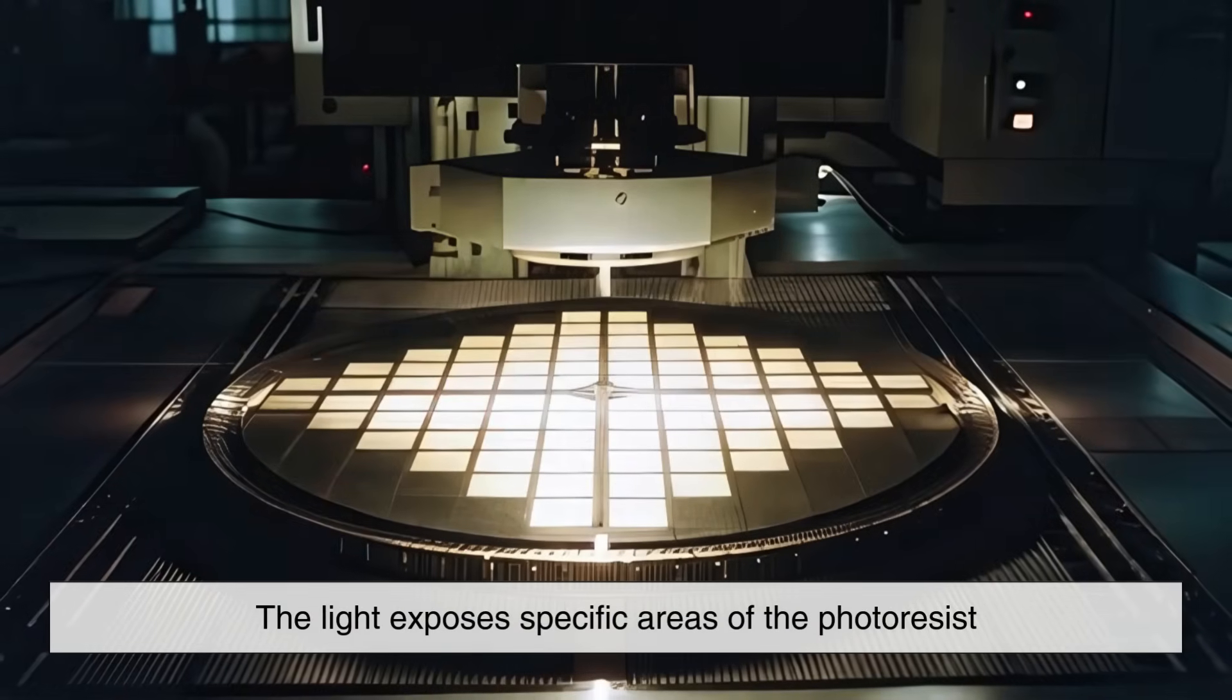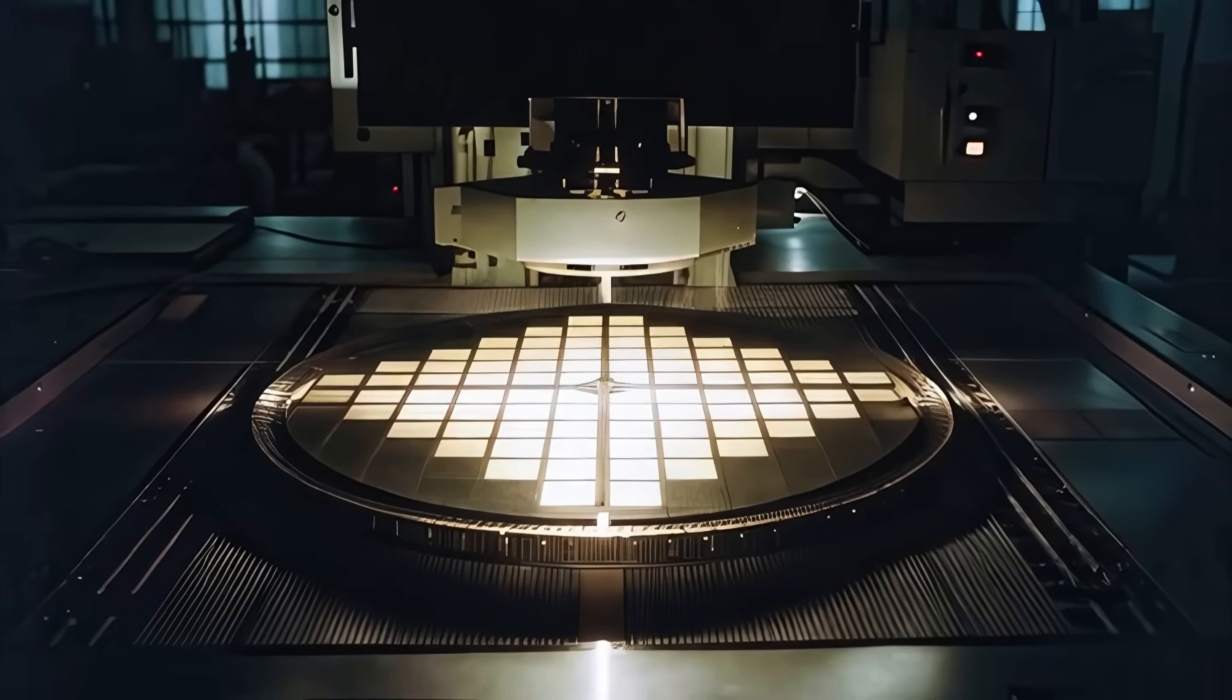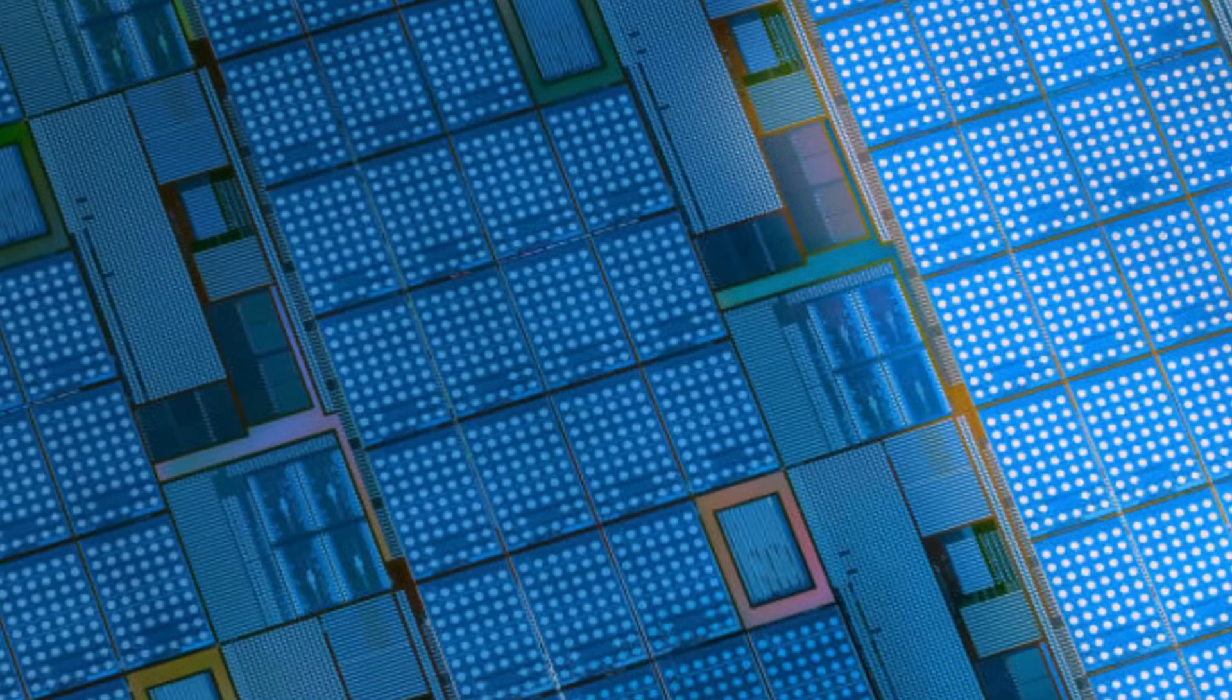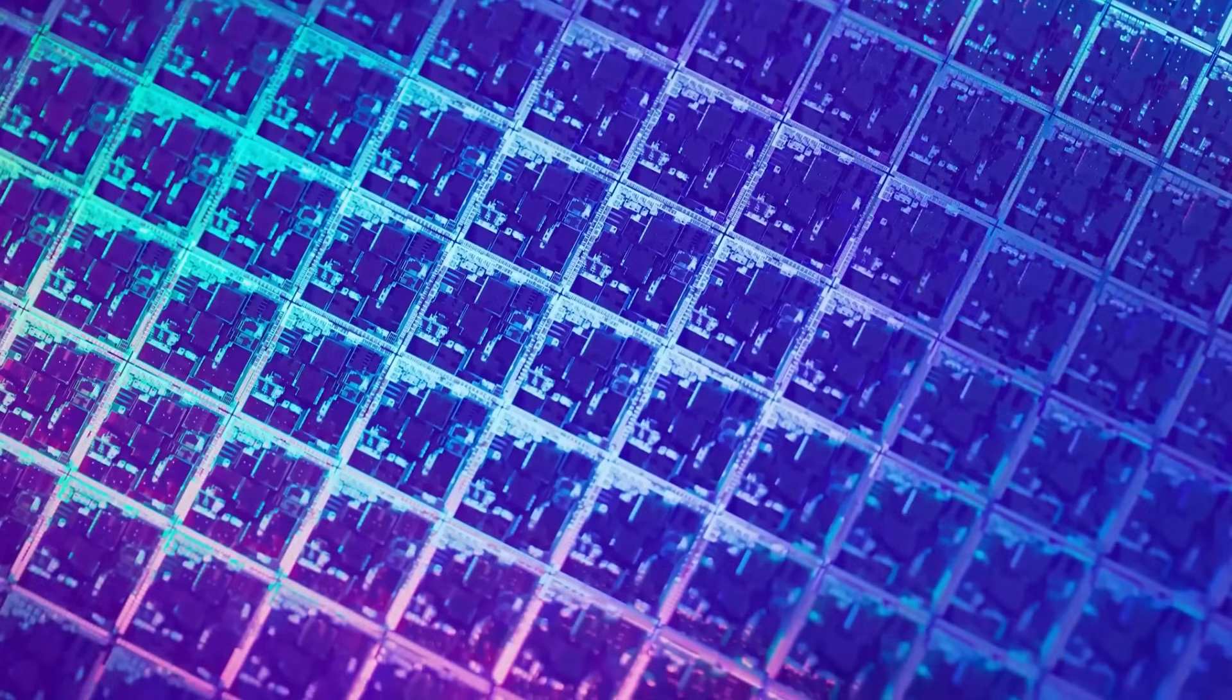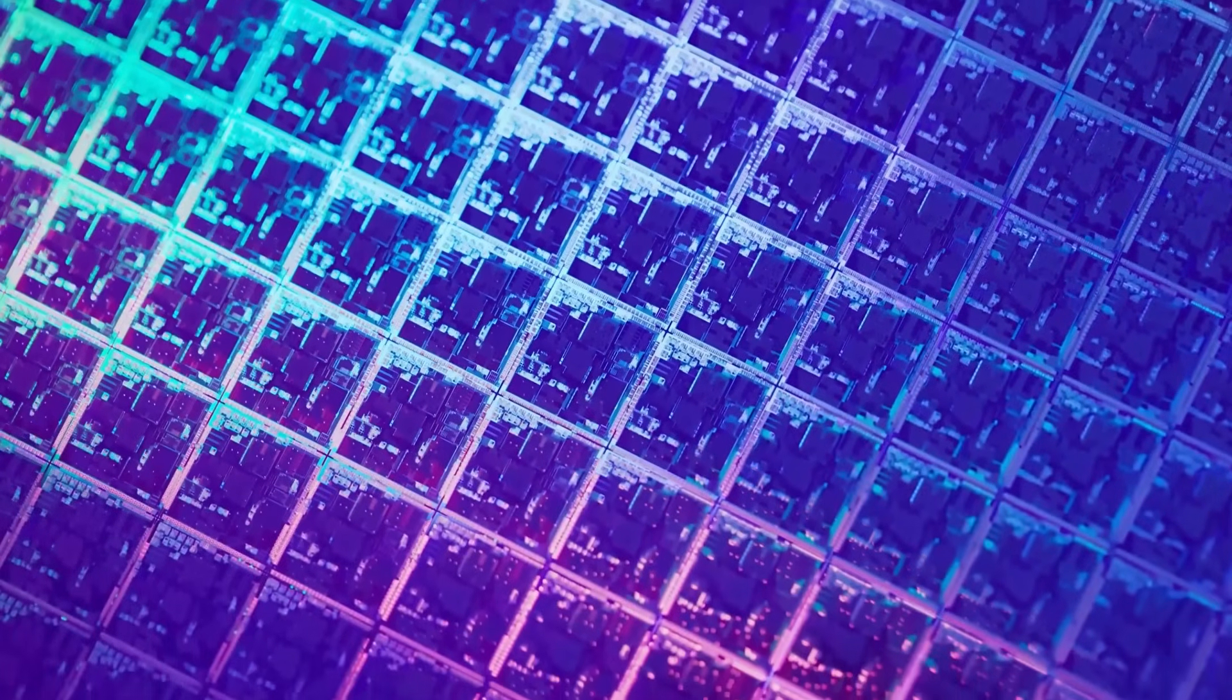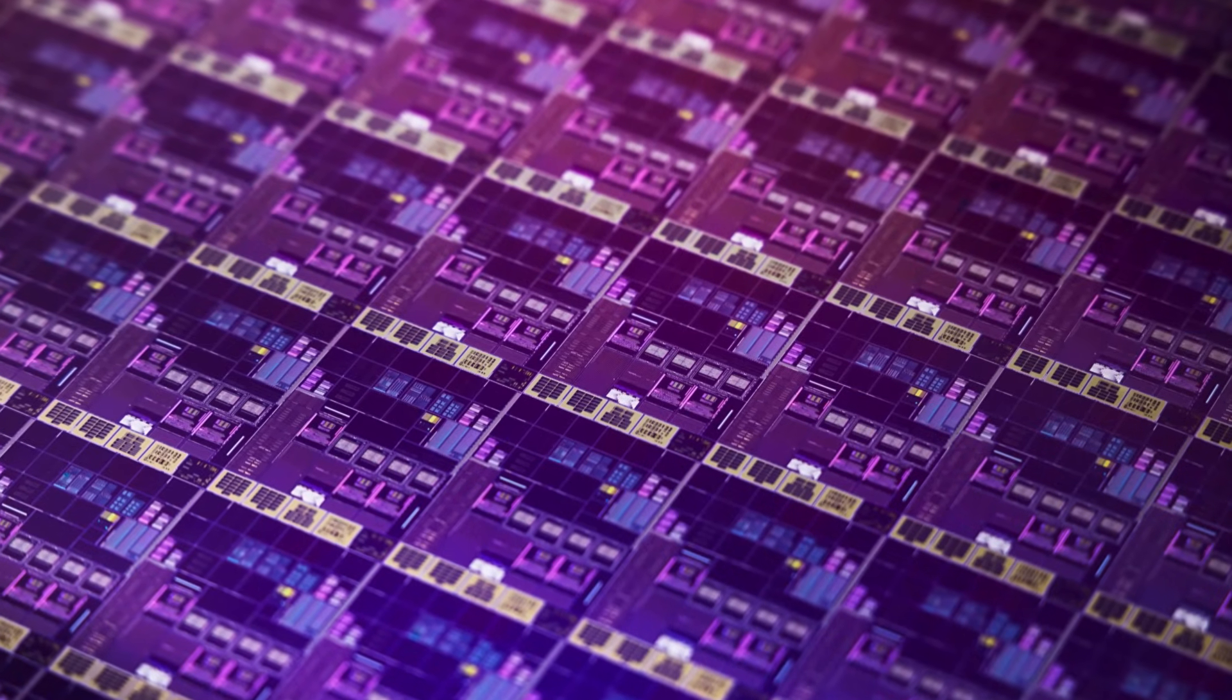The light exposes specific areas of the photoresist, hardening it in those areas while leaving the unexposed parts soft. The unexposed regions are then chemically removed, revealing the pattern of the microcircuit. This process is repeated multiple times with different masks to create multiple layers of transistors and interconnections on the chip.